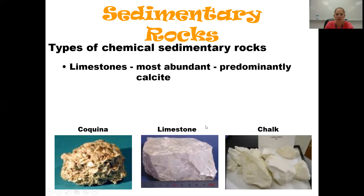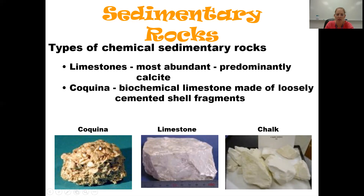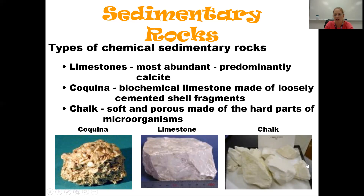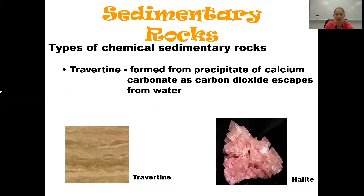Limestone is our most abundant chemical sedimentary rock, predominantly made of calcite — which we learned about when discussing minerals. Coquina is the one where shell fragments are glued together. Chalk is also a chemical sedimentary rock because it's made of the hard parts of microorganisms. Travertine contains calcium carbonate, which is calcite.